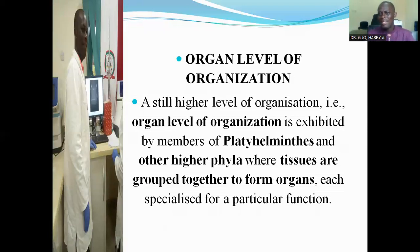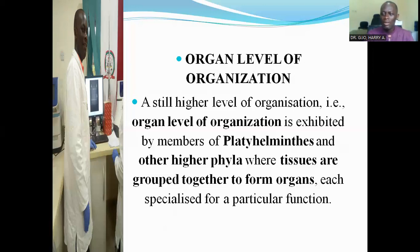They also have the organ level of organization. A still higher level of organization — that is the organ level of organization — is exhibited by members of platyhelminthes and other higher phyla, where tissues are grouped together to form organs, each specializing for a particular function. Such organisms are said to be in the organ level of organization.